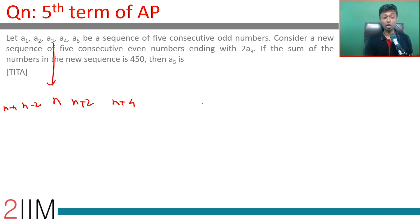Consider a new sequence of five consecutive even numbers ending with 2*a3. So a3 is ending with 2*a3. Five consecutive even numbers. If sum of the numbers in the new sequence is 450, I'm going to think about the new sequence as m, m plus 2, m plus 4, m minus 2, m minus 4.